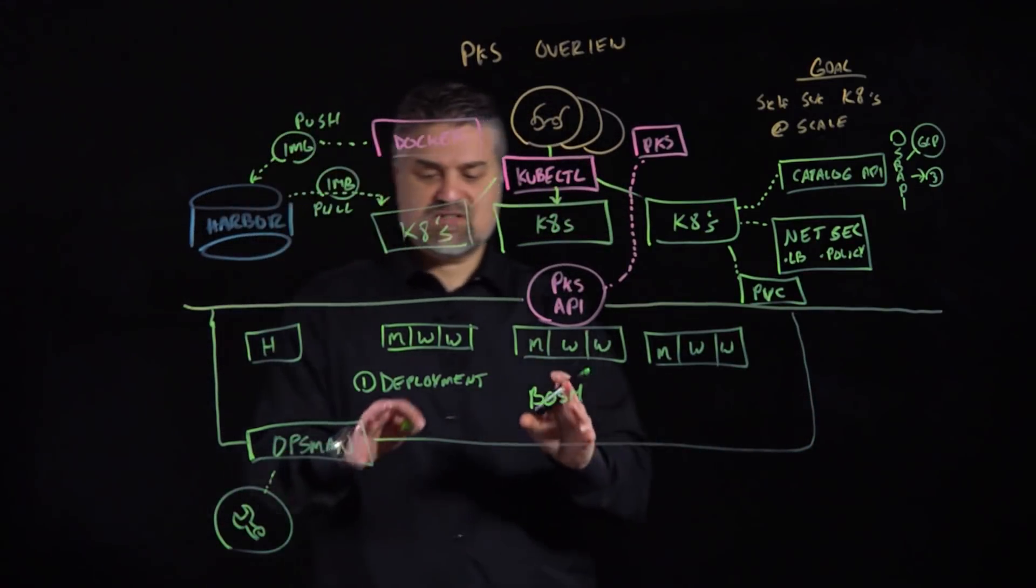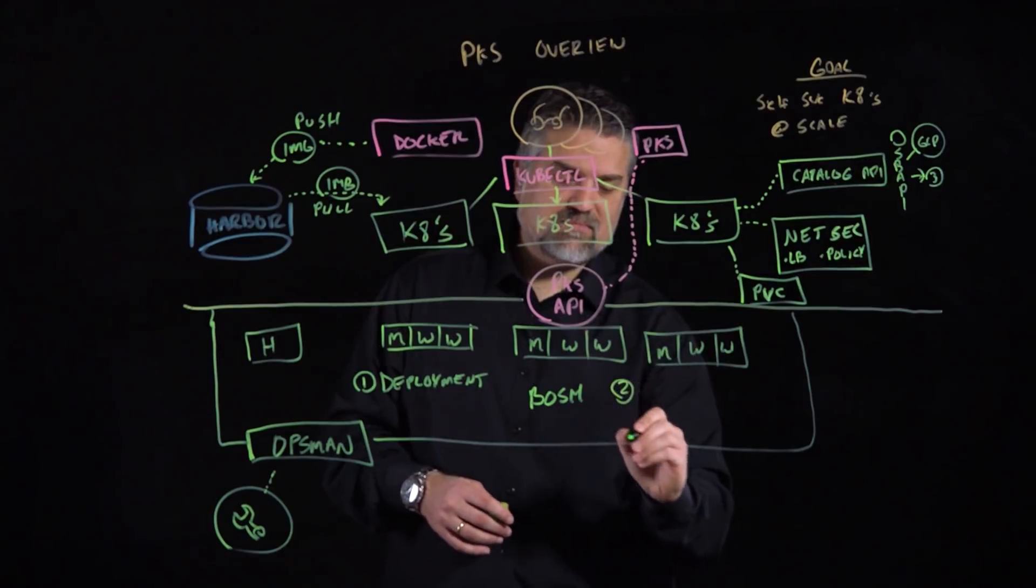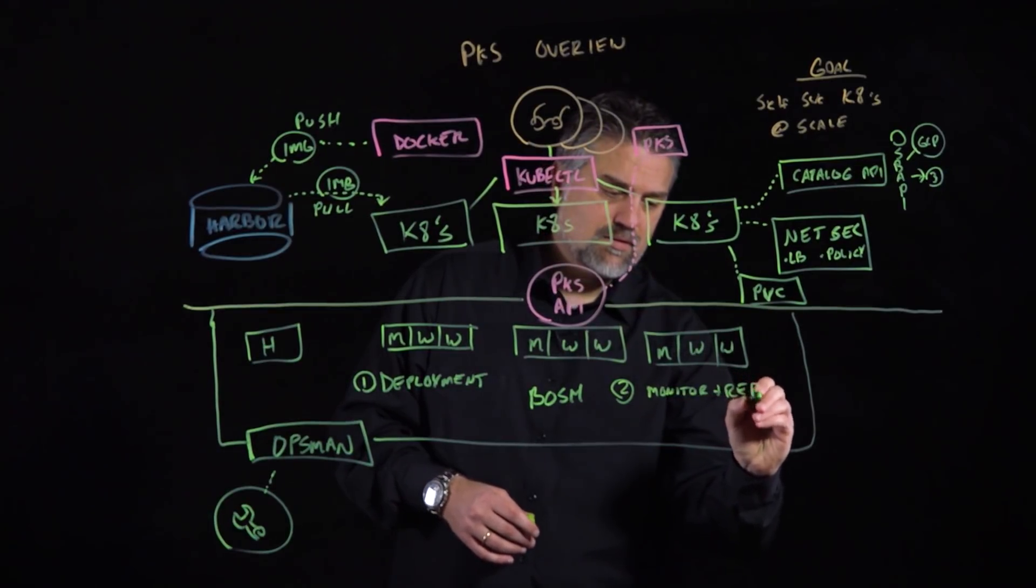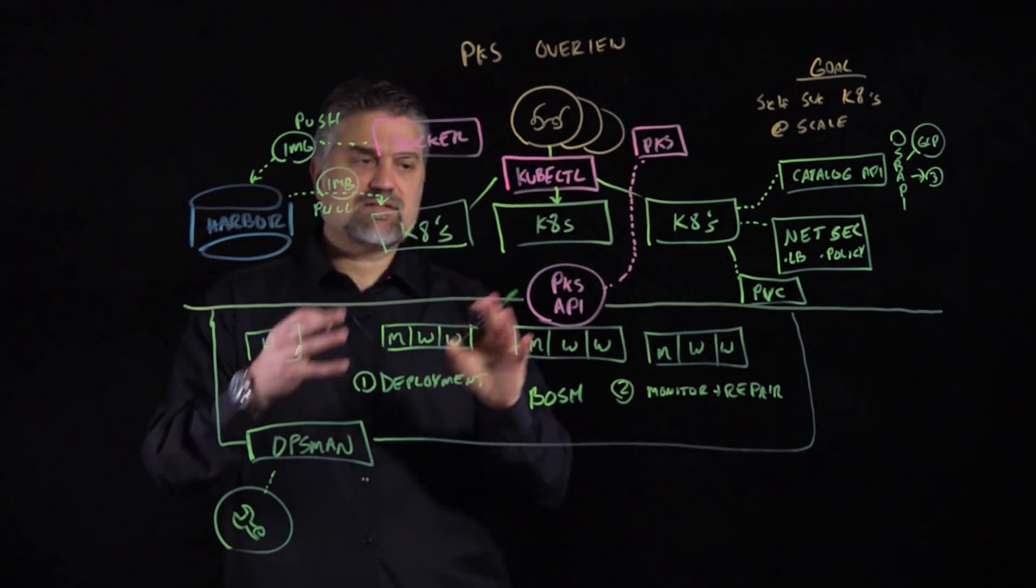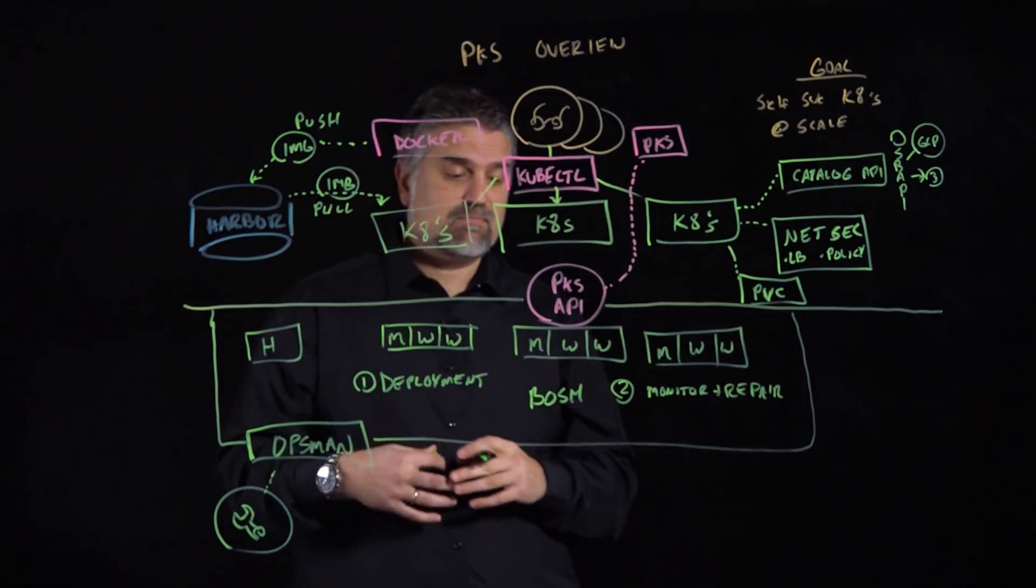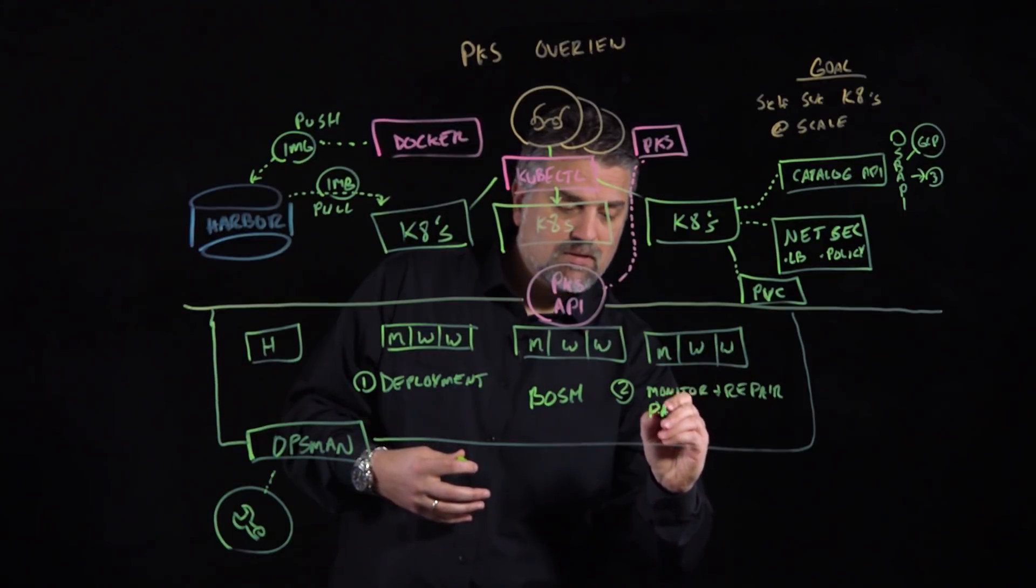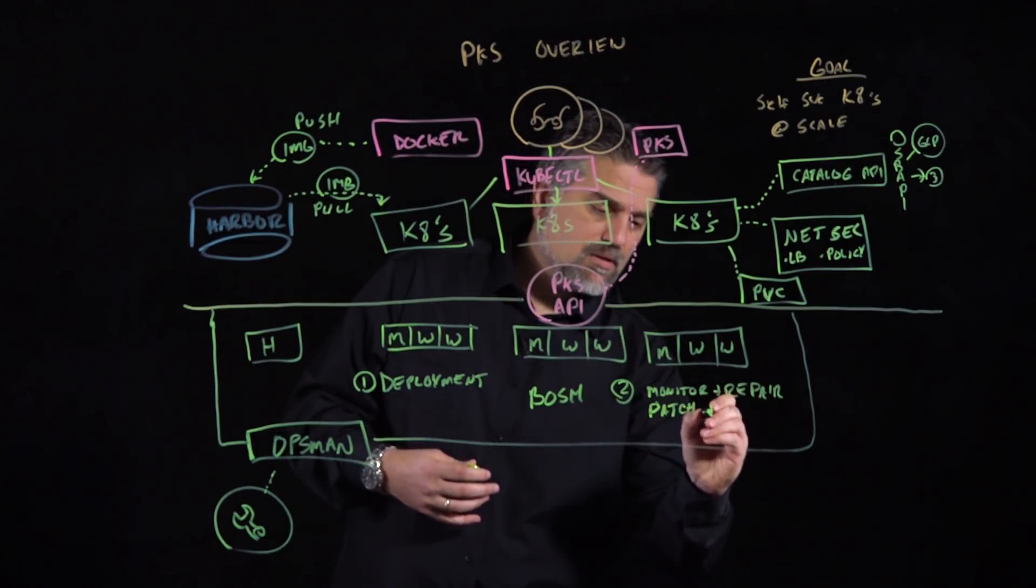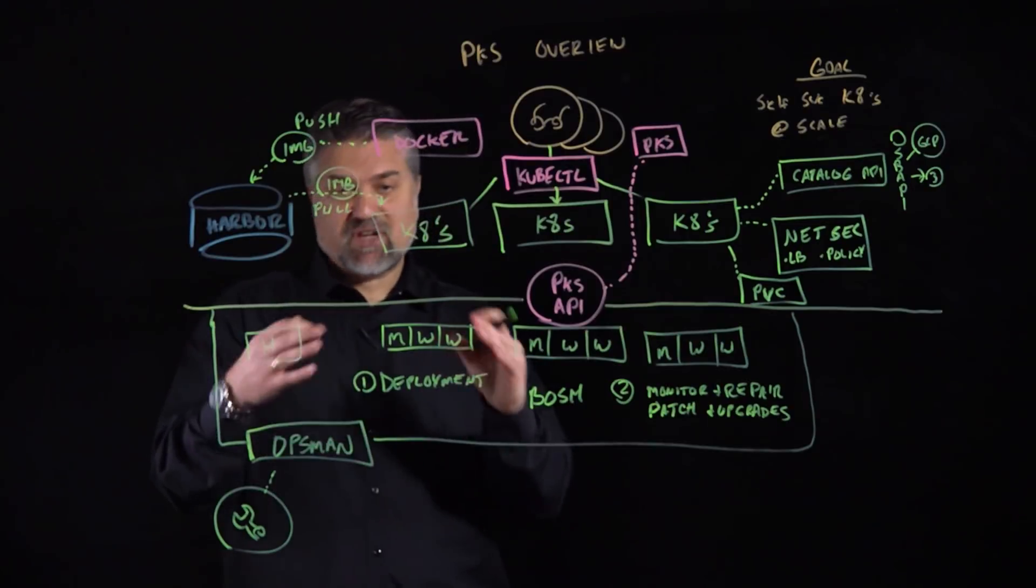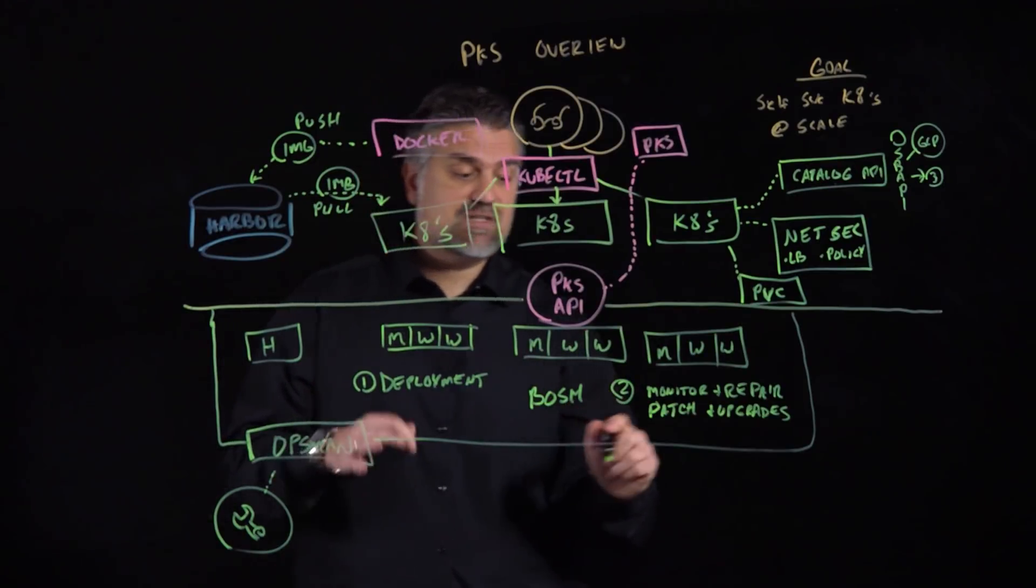Now remember I said Bosh doesn't just do deployment. I mentioned management when we talked about this Harbor instance here. There's a lot of day two capabilities in Bosh. One of those is to monitor and repair. So if any of these instances that are serving these upper level services to our pipelines and our applications suffer a failure, get compromised, need to be rebuilt, need to be patched, or upgraded, Bosh will actually help us do that. Bosh will automatically repair in case where an instance is unhealthy, and it will offer us a way to do scalable patches and upgrades as well as scaling.